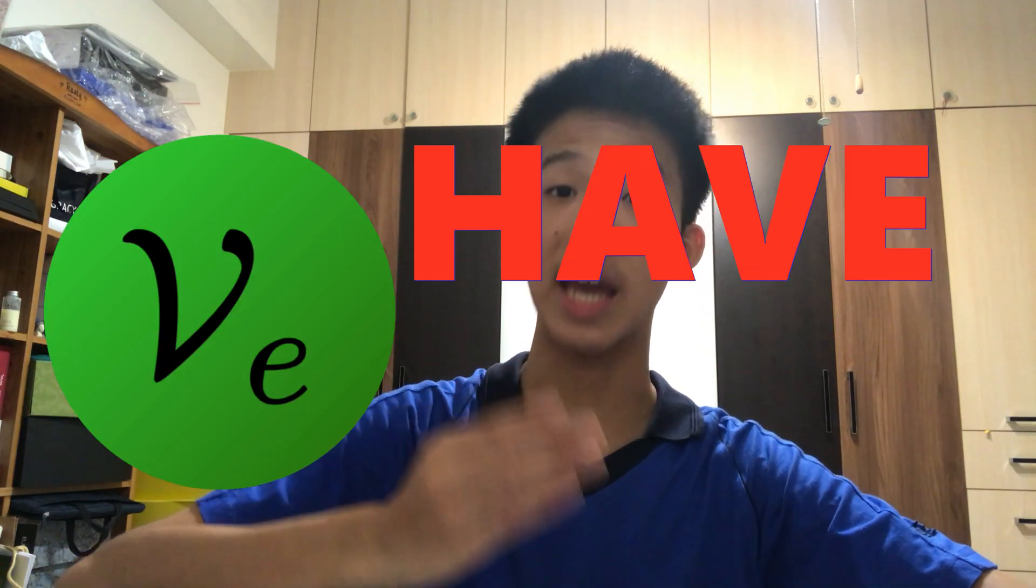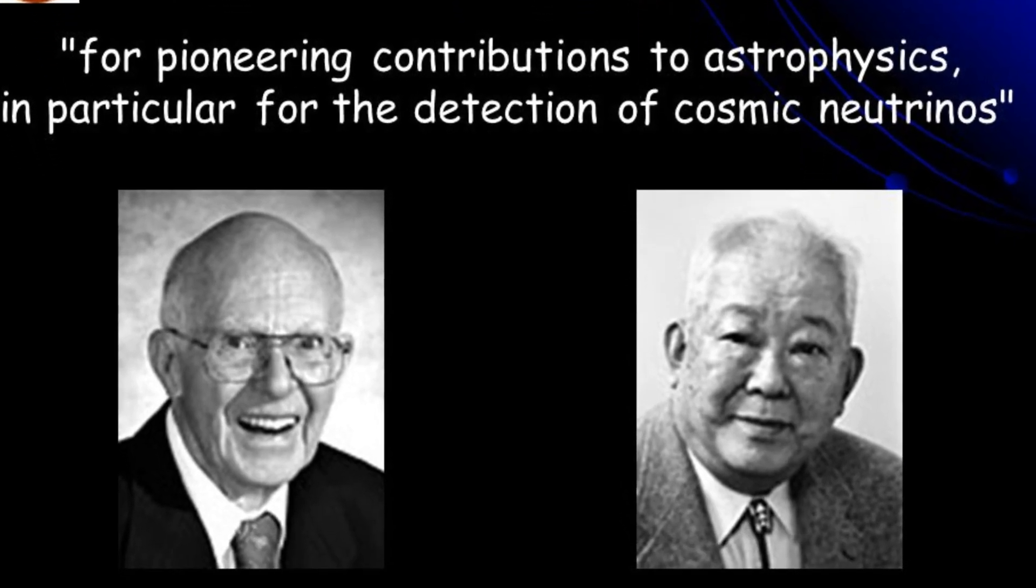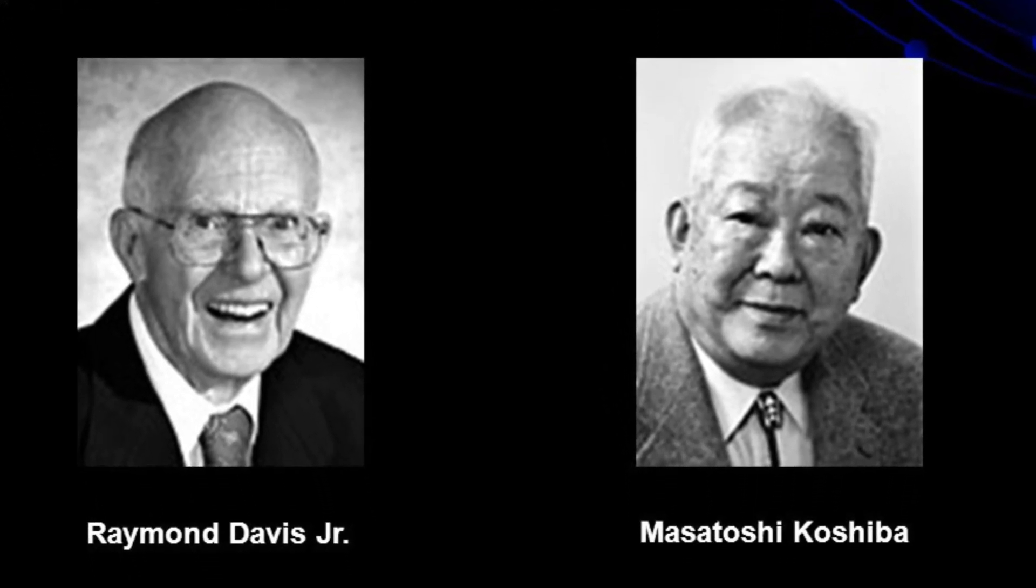What's interesting is that this conversion can only happen if neutrinos have mass, which means the old theory was wrong. This discovery gave us a chance to understand neutrinos better. We hope that one day, we can unlock the true secrets of these tiny particles.